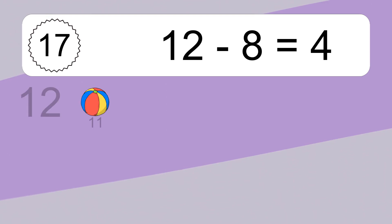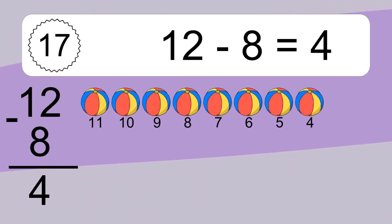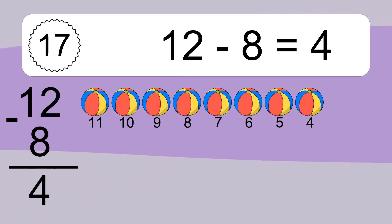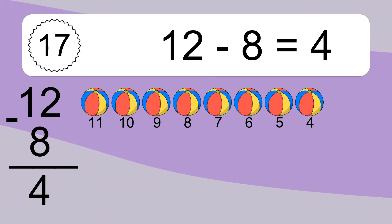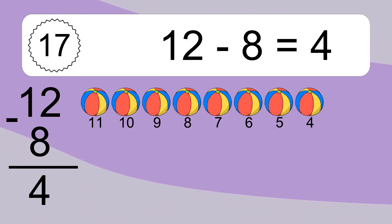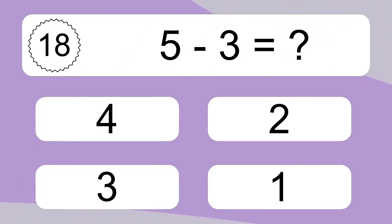12 minus 8 equals 4. Let's count it. 11, 10, 9, 8, 7, 6, 5, 4. 5 minus 3 equals what?